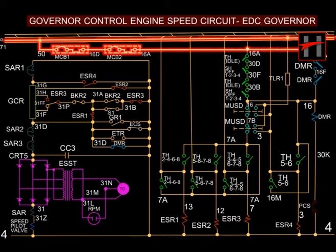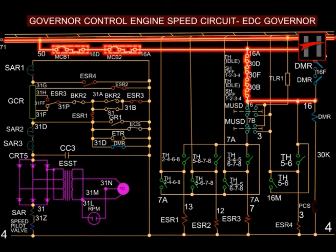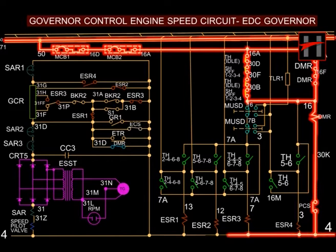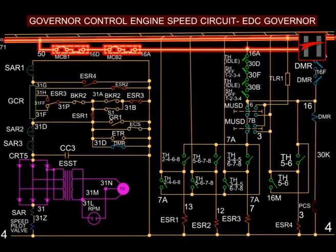At idle position, current from cable number 13 energizes cable number 16A via closed master control breakers 1 and 2, and further energizes throttle handle interlocks at idle (cable number 30D), selector handle interlocks (cable number 30F), throttle handle interlocks at idle (cable number 30B), selector handle interlocks, and cable number 16. Current from cable number 16 flows through the DMR coil and close BCS contact 30K4, energizing cable number 4. The DMR self-interlocks 16-16F and 16F-16A then come to the closed position.